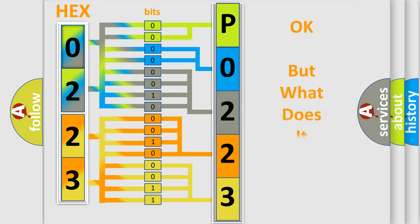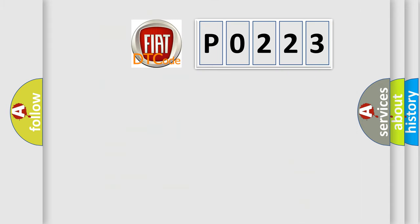The number itself does not make sense to us if we cannot assign information about what it actually expresses. So, what does the diagnostic trouble code P0223 interpret specifically for Fiat car manufacturers?